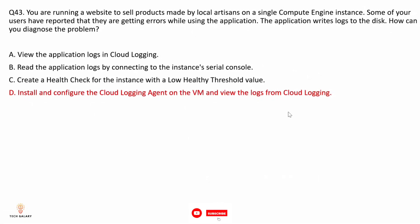Option A: view the application logs in Cloud Logging. This is not correct because VM logs do not appear in Cloud Logging by default — the application would need to send logs directly to Cloud Logging. Option B: read the logs from the instance serial console. This requires manual intervention and does not provide real-time access, so it is not an efficient or scalable solution.